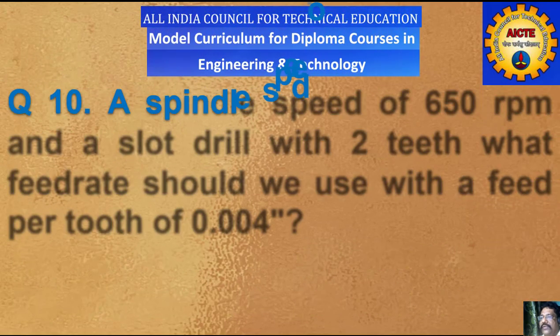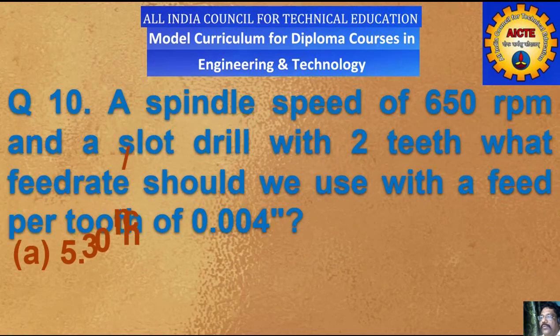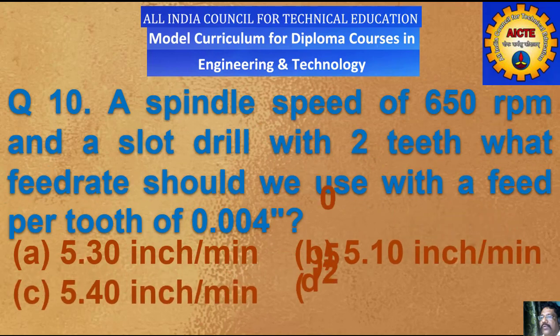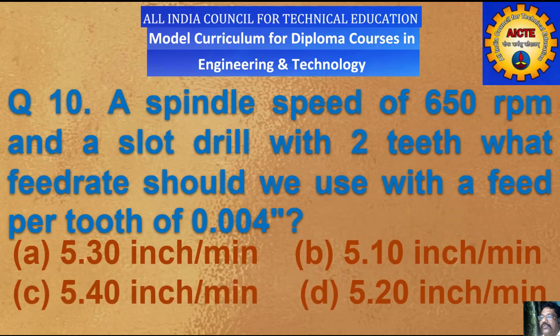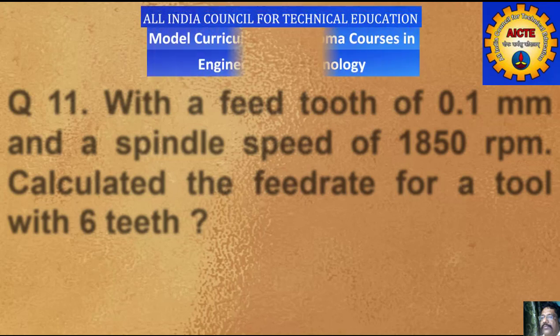Question number 10: with a spindle speed of 650 rpm and a slot drill with 2 teeth, what feed rate should be used with a feed per tooth of 0.004 inches? A) 5.30 inch per minute, B) 5.10 inch per minute, C) 5.40 inch per minute, D) 5.20 inch per minute.